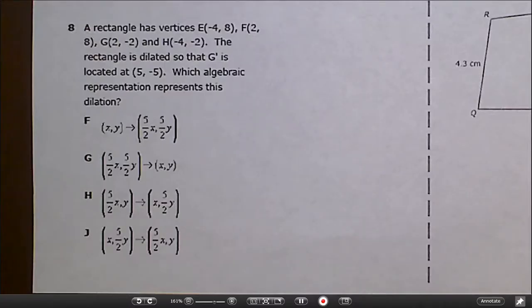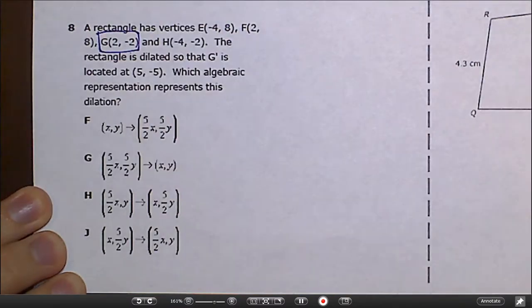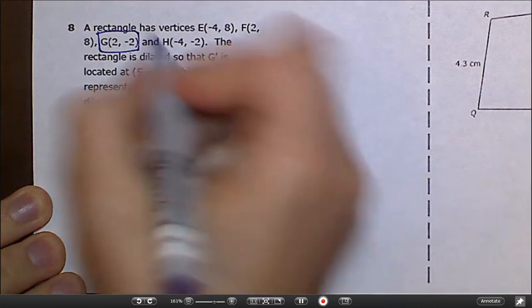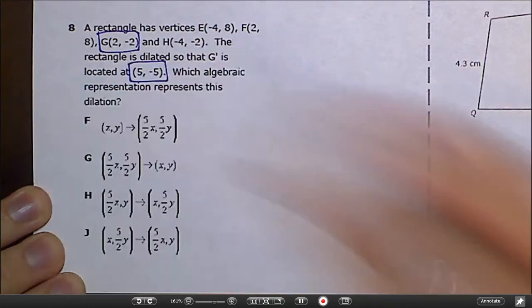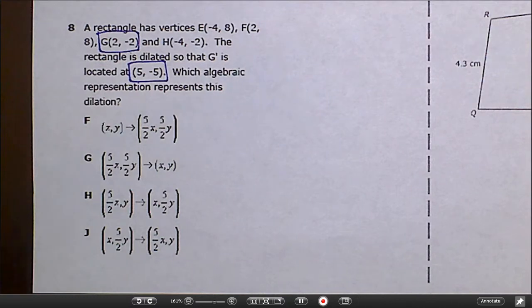Let's look at number eight together. A rectangle has vertices E, F, G, and H. The rectangle is dilated so that G prime is located at (5, -5). Okay, so we start off with G, which is at (2, -2), and we end up at G prime, which is at (5, -5). Which algebraic representation represents this dilation?